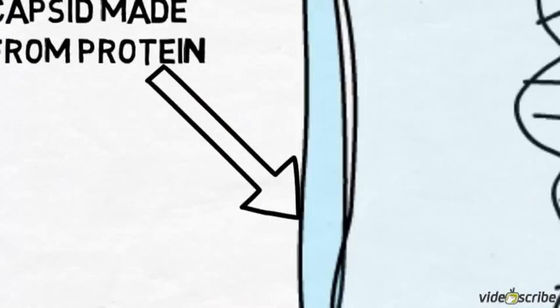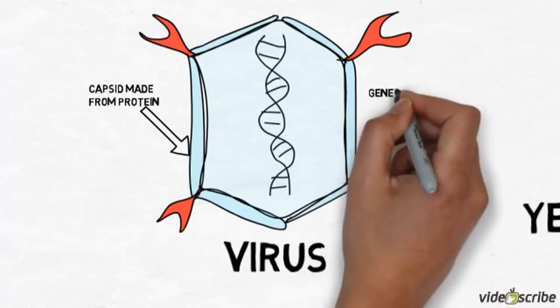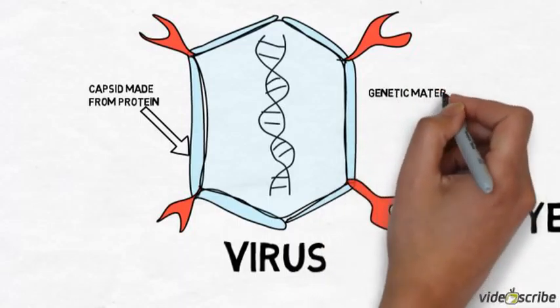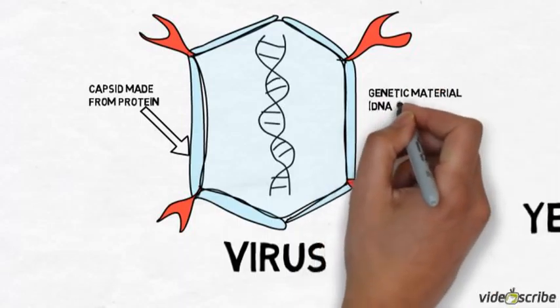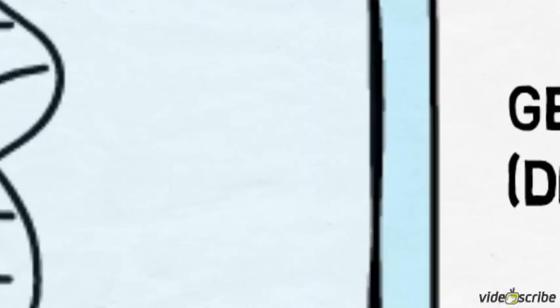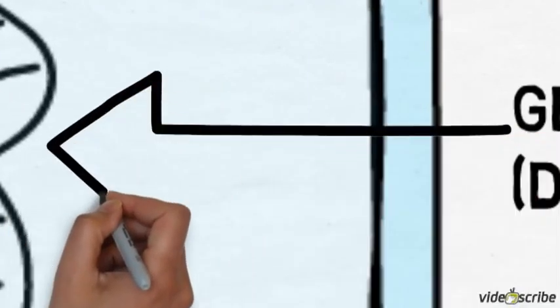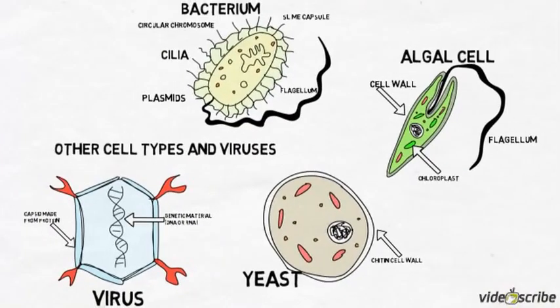They will have proteins in their capsid that allow them to anchor to the cells, which are the red things on the side, and then the genetic material can be injected into a particular cell and then they replicate inside cells.